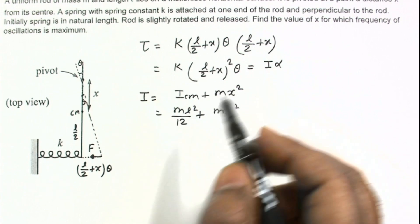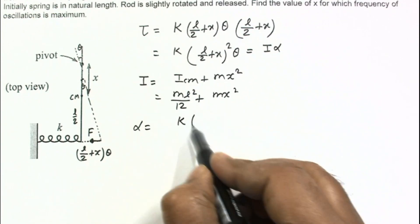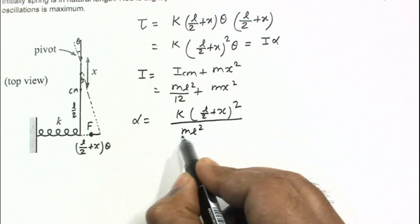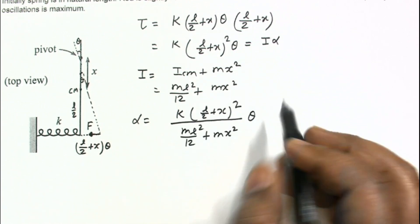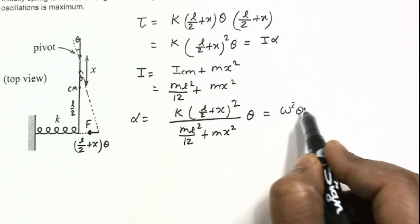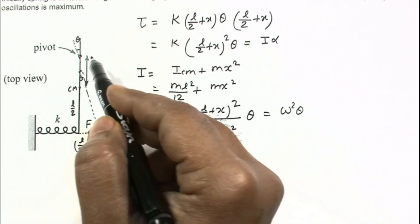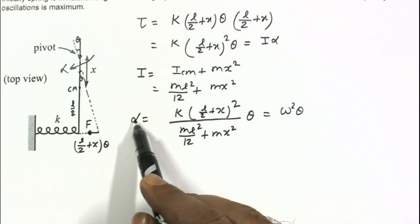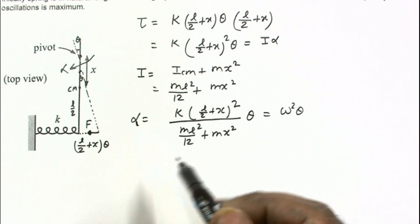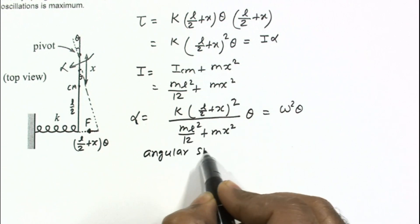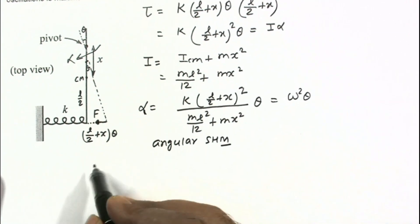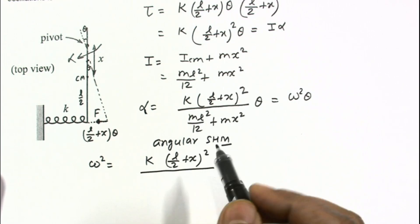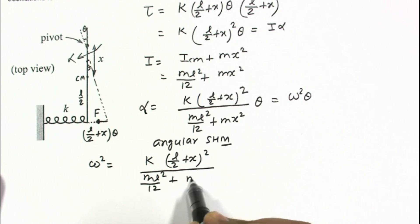So putting this value of I in this equation, we can find alpha is equal to K times L by 2 plus x squared divided by the value of moment of inertia which is ML squared by 12 plus MX squared. Comparing this result with omega squared into theta, since alpha is directly proportional to theta and alpha brings it back to its equilibrium position, this type of motion we can say is angular SHM. Where omega is the angular frequency and this angular frequency squared omega squared can be written as K times L by 2 plus x squared divided by M times L squared by 12 plus MX squared.